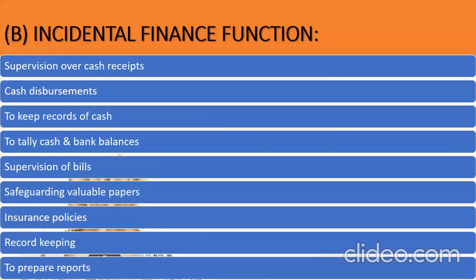We also discussed the incidental finance function in the previous lecture. One incidental function is supervising over cash receipts — I had told you that sales constitute the majority of cash receipts. As a finance manager, you will have to pay attention over cash receipts to see that money is realized from sales in time, whether cash or credit sales. The risk of bad debts should be reduced to a minimum level.